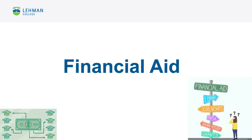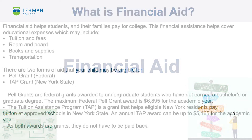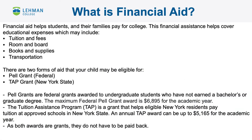Now, what is financial aid? Financial aid helps students and their families pay for college. This financial assistance helps cover educational expenses which include tuition and fees, room and board, books and supplies, and transportation. There are two forms of aid that your dependent may be eligible for: the Pell Grant, which is awarded by the federal government, and the TAP Grant, which is awarded by New York State.